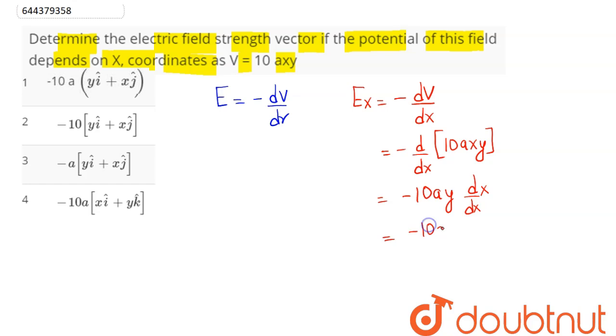So x component is minus 10Ay and in similar manner electric field y component is equal to minus of dV divided by dy. So this comes as minus of dV/dy of potential 10A into x into y. Now we consider x as constant. So this is minus 10Ax into dy/dy which is equal to 1.